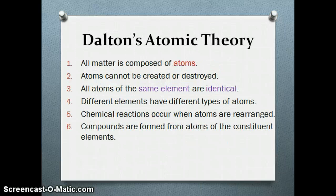Now we're going to talk about the main points of Dalton's atomic theory. Number one: all matter is composed of atoms, which are extremely small particles. Number two: atoms cannot be created or destroyed; they cannot be subdivided into smaller particles — the atom is the smallest particle according to Dalton. Number three: all atoms of the same element are identical, meaning they have the same size, mass, and other properties.